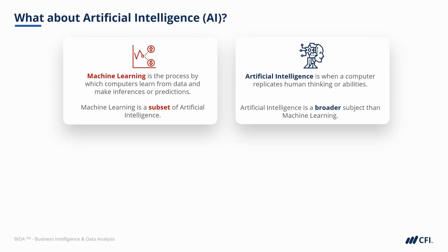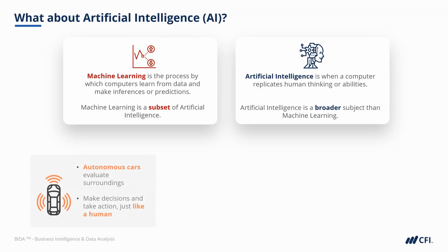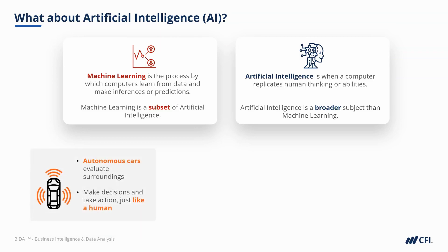Let's take a look at three examples. Autonomous cars are constantly evaluating surroundings based on sensors and data, making decisions and taking actions just like a human would — so that is artificial intelligence.